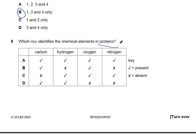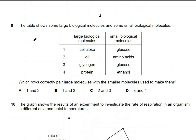Question 8: which chemical elements are found in proteins? Proteins consist of carbon, hydrogen, oxygen, and nitrogen, so all of these biomolecule elements are present. The answer is A.